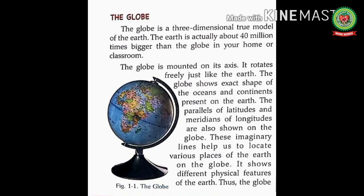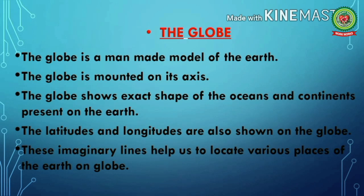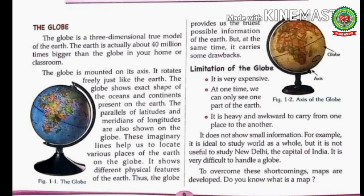Before we start this topic, here are important points related to the globe. The globe is a man-made model of the earth. The globe is mounted on its axis. The globe shows the exact shape of the oceans and continents present on the earth. The latitudes and longitudes are also shown on the globe. The globe is a three-dimensional true model of the earth — three-dimensional means it consists of length, height and breadth. The earth is actually about 40 million times bigger than the globe in your home or classroom.